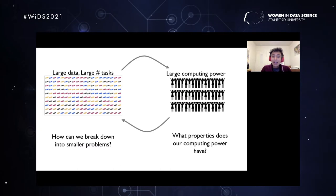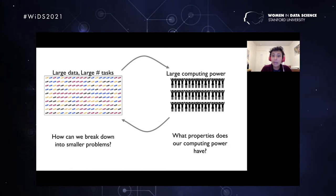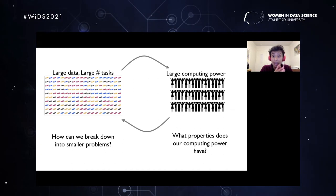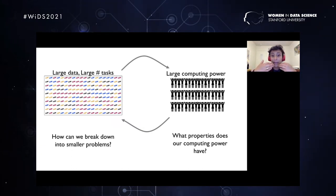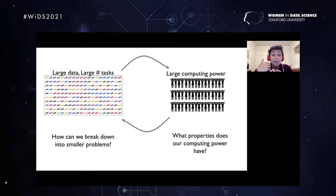For parallelizing a problem, first we need something that has a lot of data and requires a lot of tasks, and at the same time we need a large pool of computing power. There are many ways to map one to the other. We need to answer two questions: first, how can we break down our big problem into smaller problems, either by cutting the data or cutting the number of tasks? Second, depending on the computing power available, some types of breakdown may work better than others — so we need to know what properties our computer has.